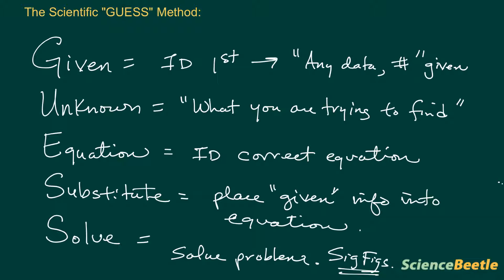These are the steps that I would like for you to use. There are five general ones: identify the given, identify the unknown, find the correct equation that you want to use, substitute the values into the equation, and then solve for the unknown. Those are the steps in the scientific GUESS method. Keep watching, keep learning, and we'll see you in the next video.